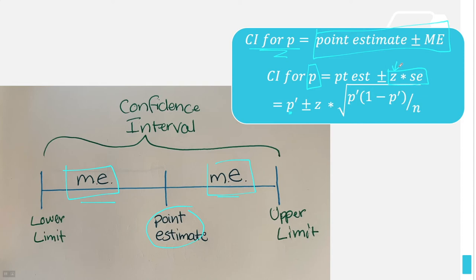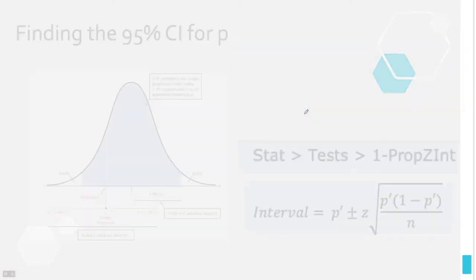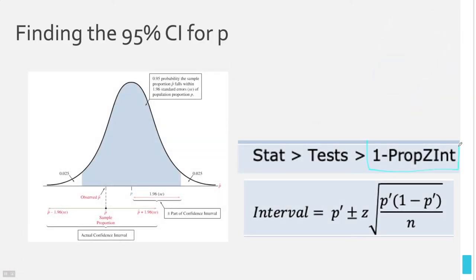We'll talk more about t-scores in the next video. The confidence interval formula for proportions is p-prime plus or minus z times the square root of p-prime times (1 minus p-prime) divided by n. But there's a much easier way: use the calculator function called 1-PropZInt (stat → test → 1-PropZInt). Instead of computing this entire formula twice — once for subtraction and once for addition — you can just use 1-PropZInt and it's done in seconds.